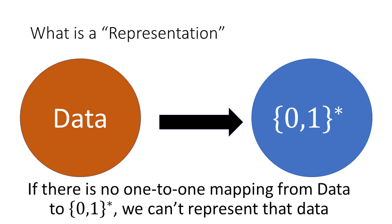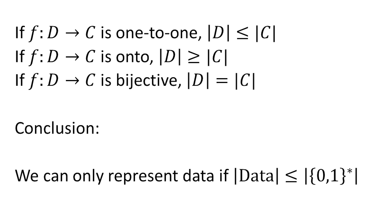If we recall from when we were talking about functions, we said that if we have a function mapping D to C and that function is one-to-one, then we can conclude that the size of D is going to be less than or equal to the size of C, because every single thing in the domain needs to map to something different in the codomain. We also said that if that function was an onto function, then the size of D had to be at least the size of C. And if it's bijective, then both of those things must be true, so the sizes of those two sets had to be equal.